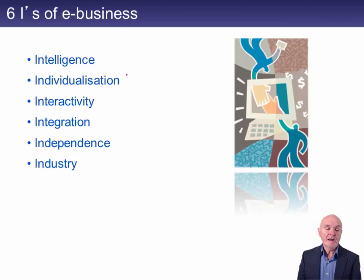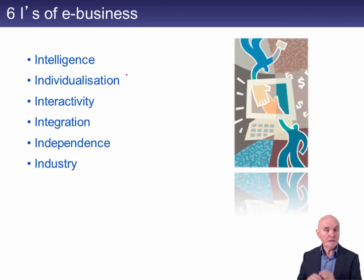And finally, there is Industry — e-business can radically change industry structure. In the book industry for Amazon, huge numbers of books, and indeed other products, are now bought online rather than going to shops. It's certainly hurting bookshops.